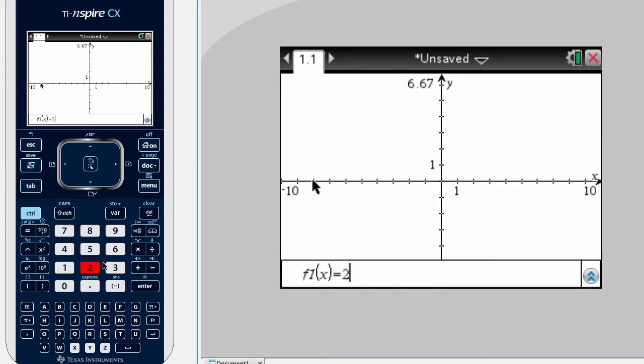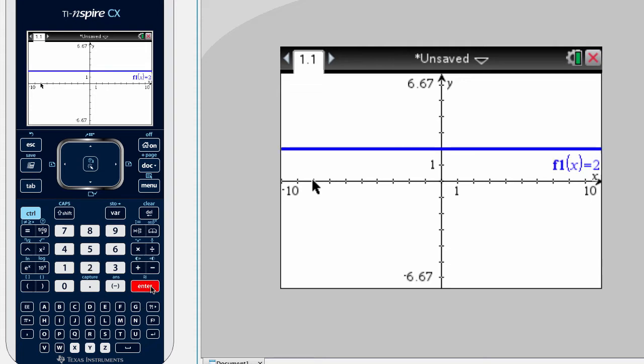Just as before, we have the entry line there. Let's just put in F of X equals 2. Let's hit Ctrl-G again, and it will bring up another line if we wanted to put a different function in there for, say, 3 minus X, and we have a new equation there.